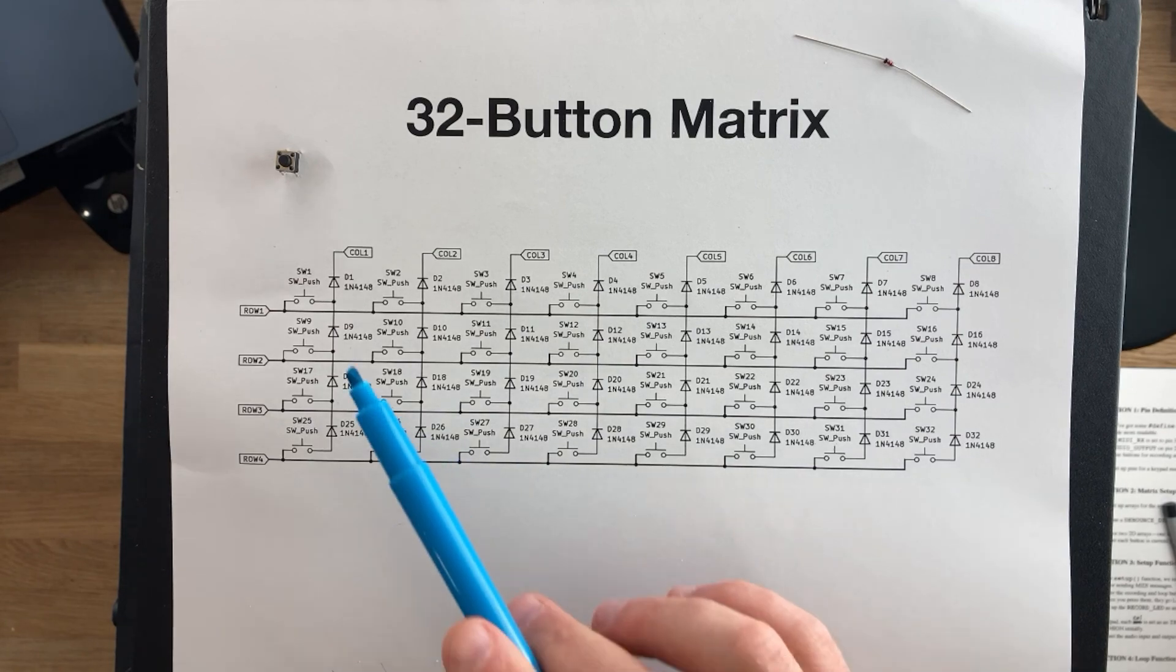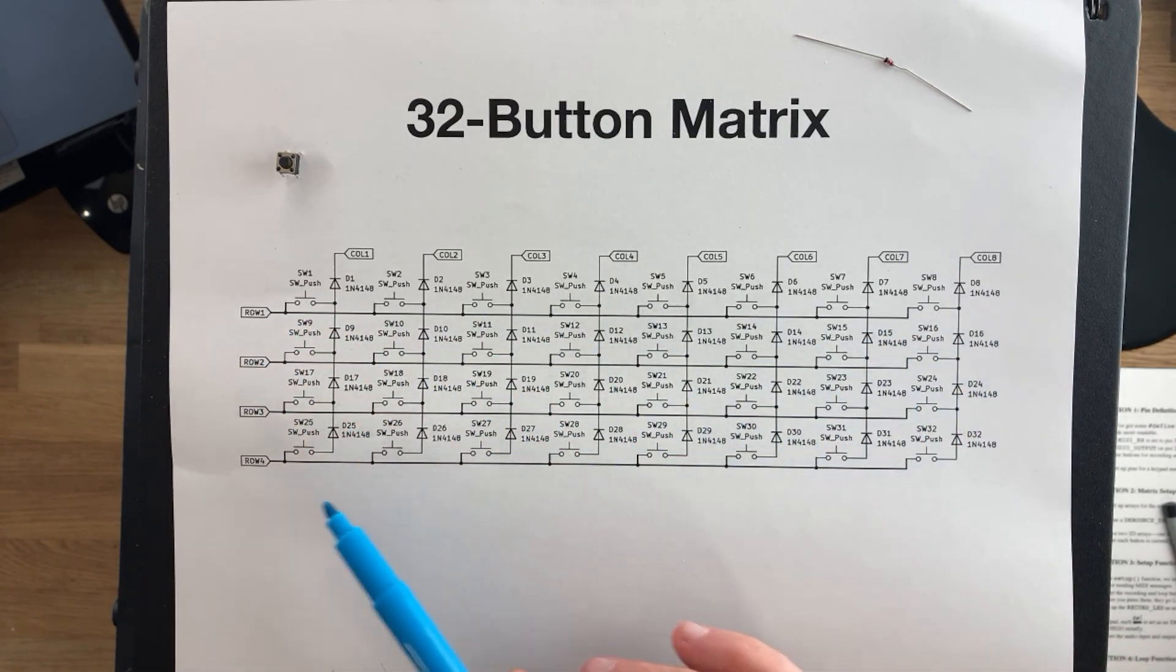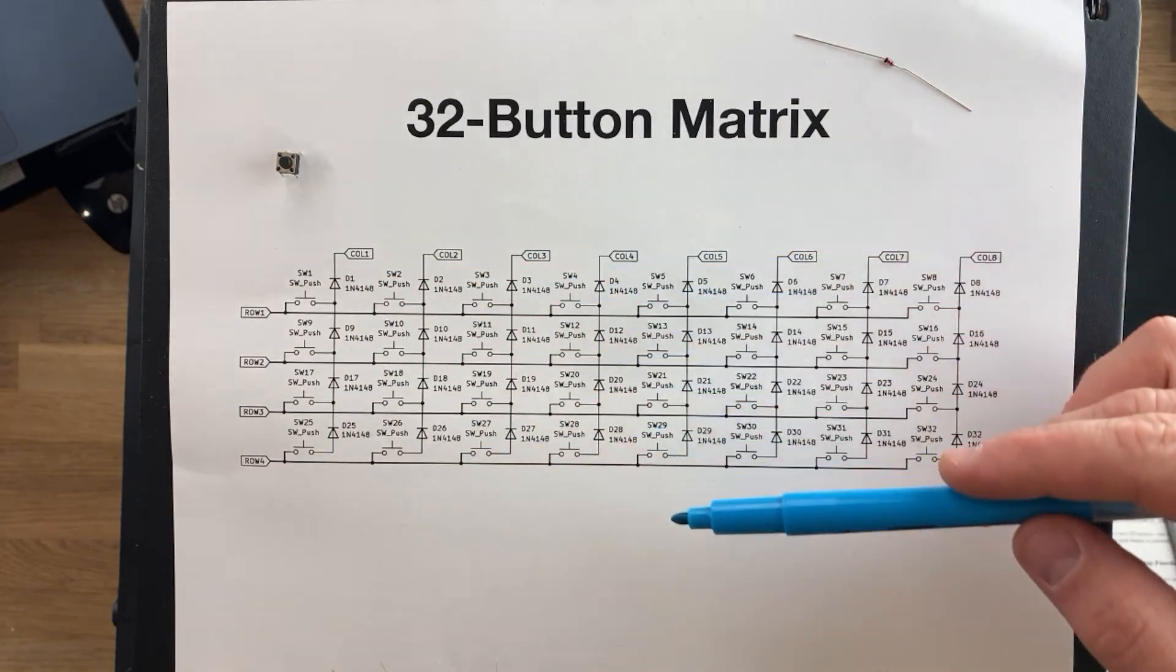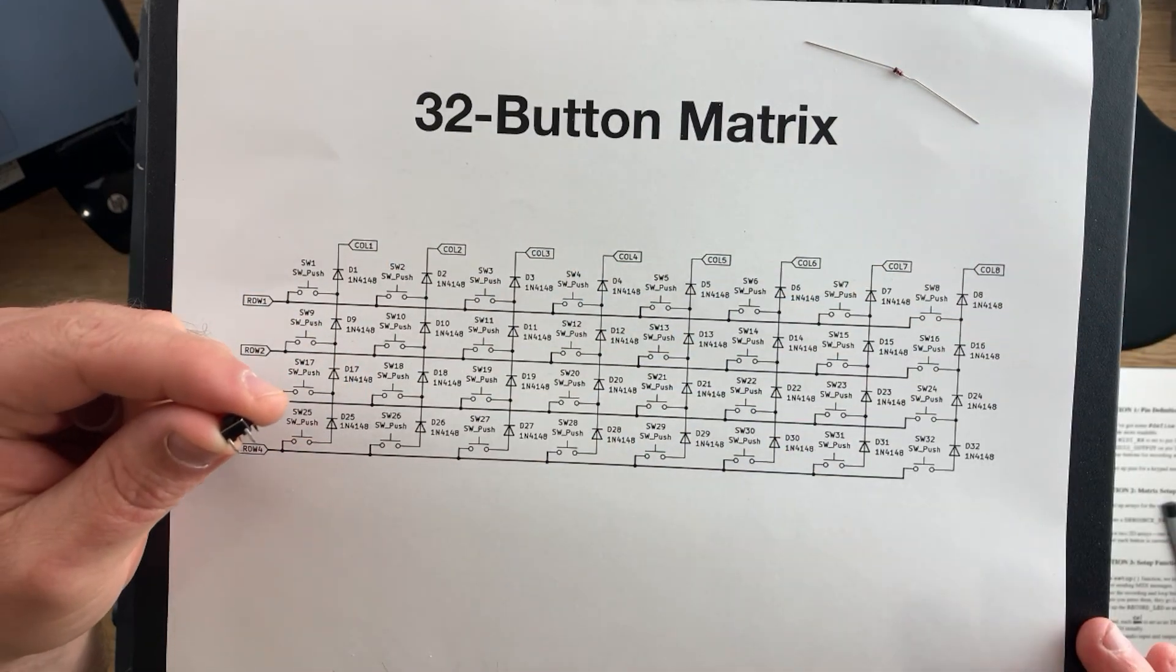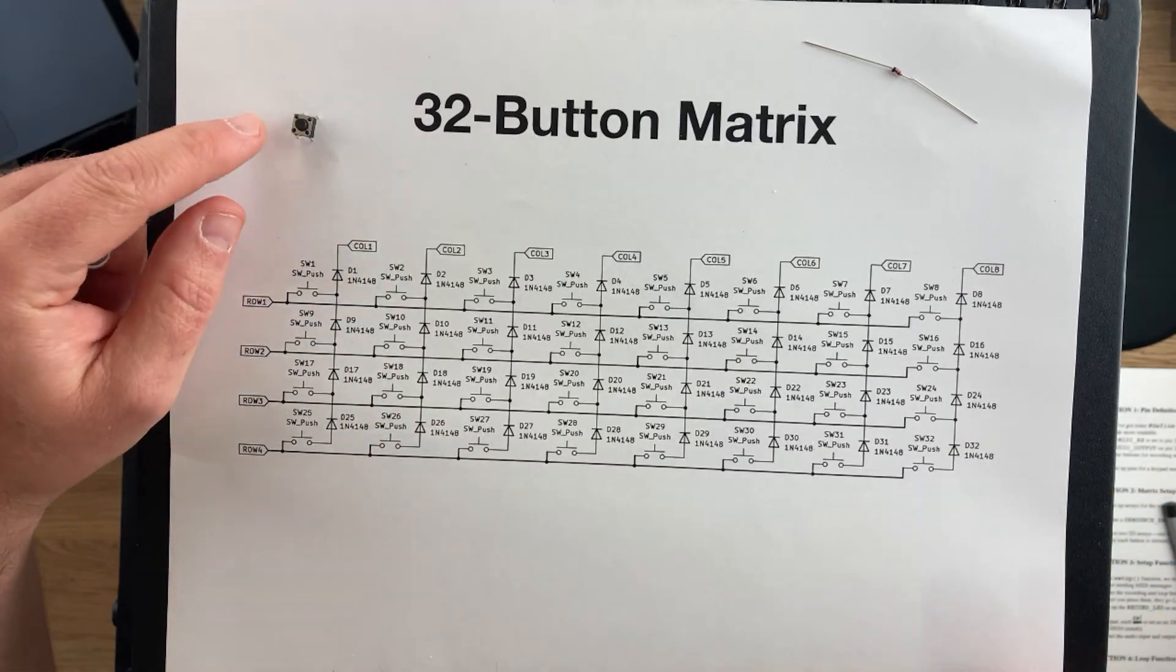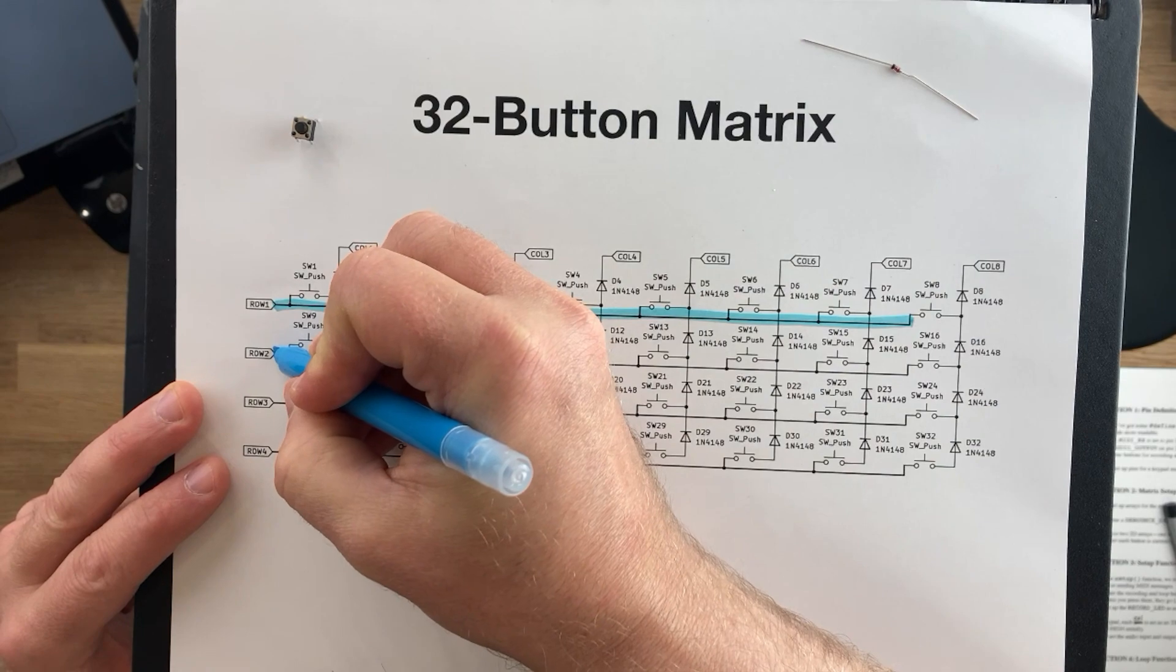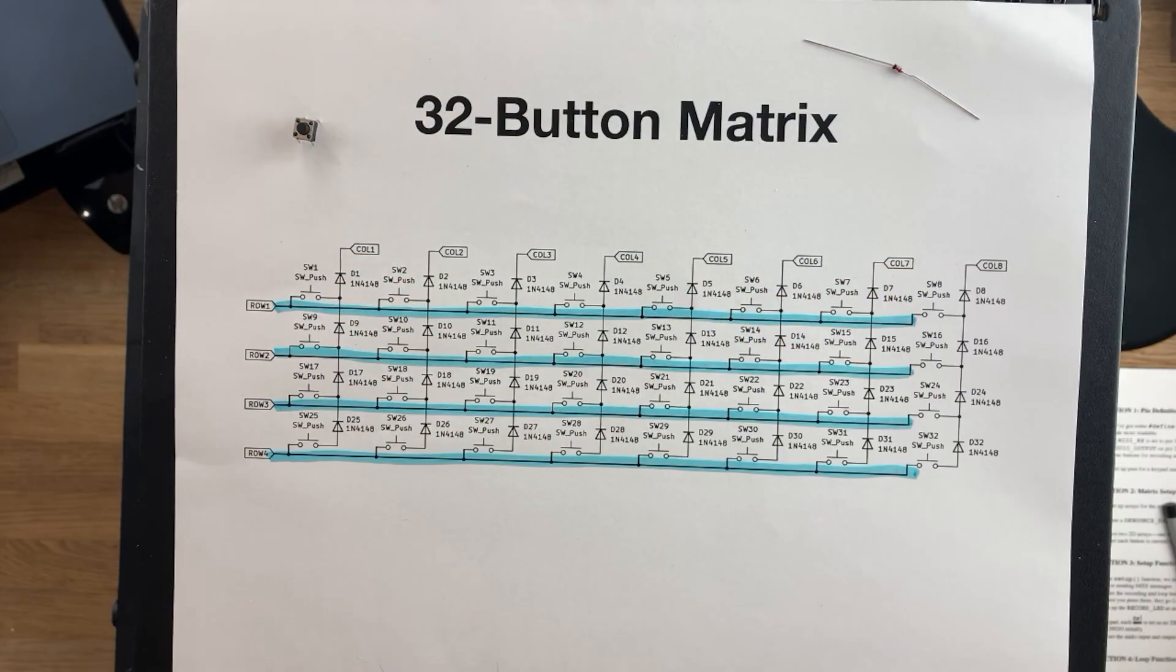Let's take a look at the key button matrix schematic. We have 32 buttons formed in four rows and eight columns. When we wire the button to the perf board, we're going to wire it so that the two legs are not connected. We're going to take one of those legs and we're going to connect them in rows like so. We'll have four rows of buttons.